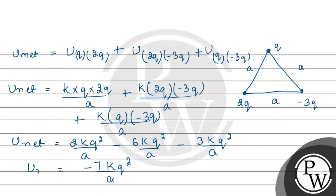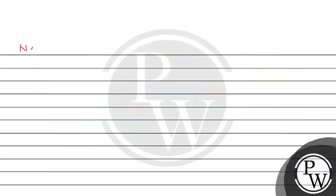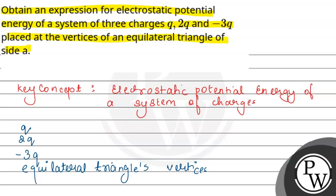So यहाँ पर हमारे पास जो net potential energy of the system आएगी, उसकी value होगी minus 7KQ²/A। Hope you understood it well. Best of luck.